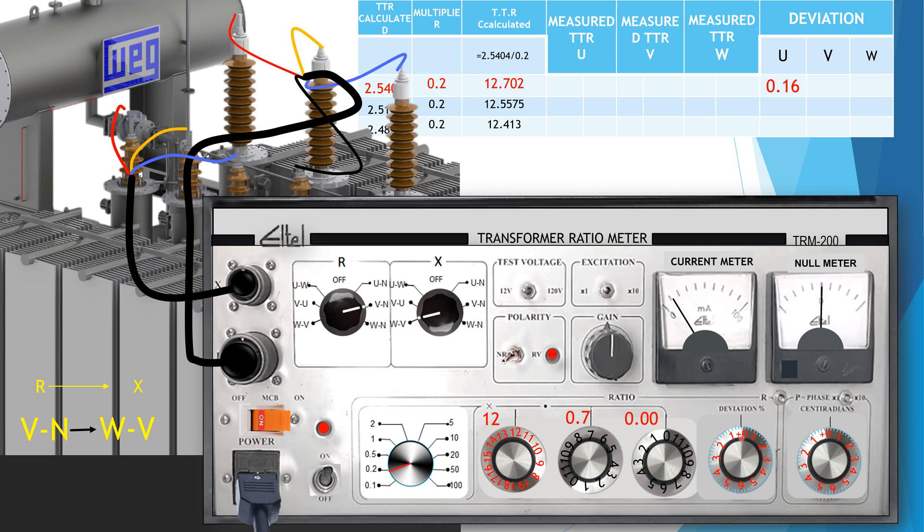Here the deviation of R-phase TTR is 0.19%.